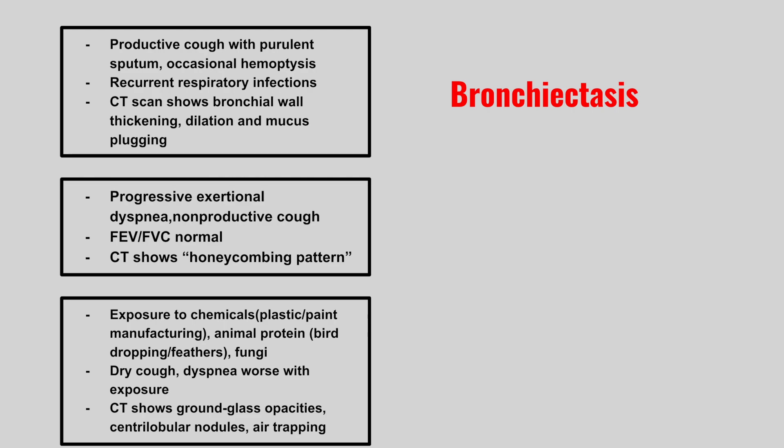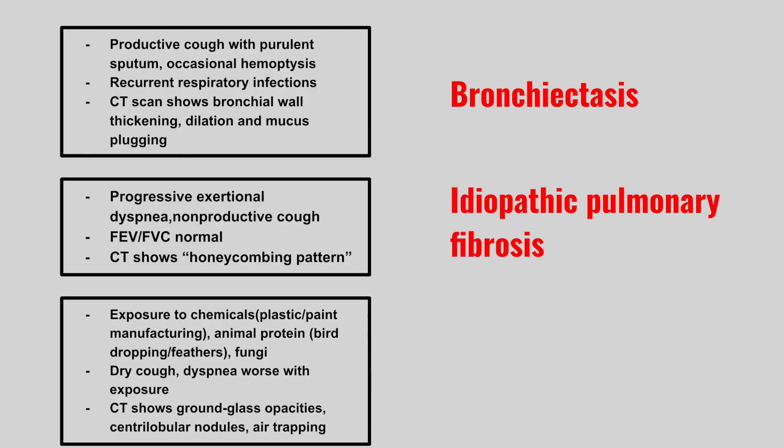Next, we have a patient with progressive exertional dyspnea, non-productive cough, FEV1/FVC ratio is normal, and CT shows honeycombing pattern. This is idiopathic pulmonary fibrosis.